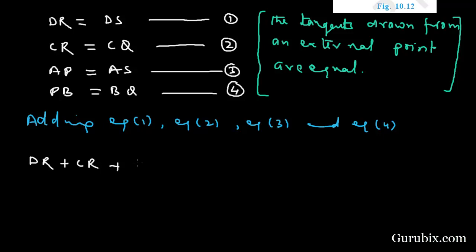So here we shall add DR plus CR plus AP plus PB. Here we shall add DS plus AS, CQ plus BQ. And let us put brackets like this.